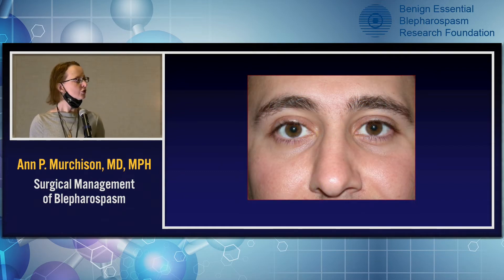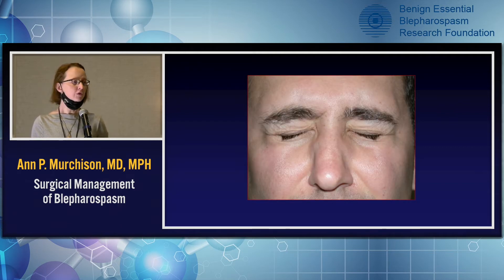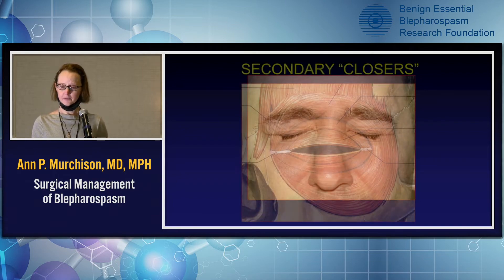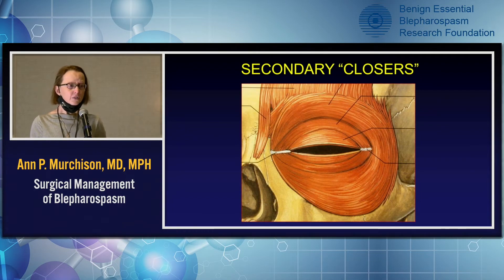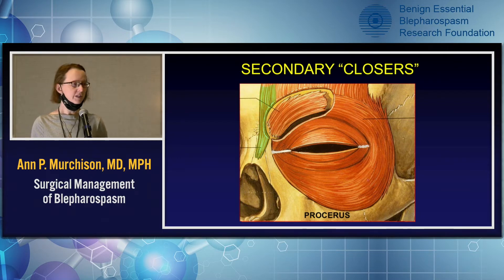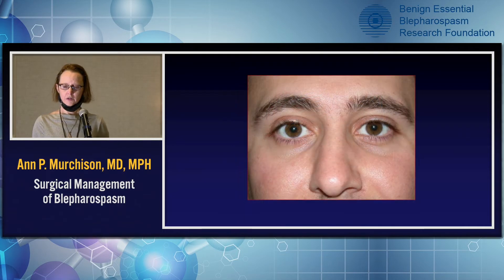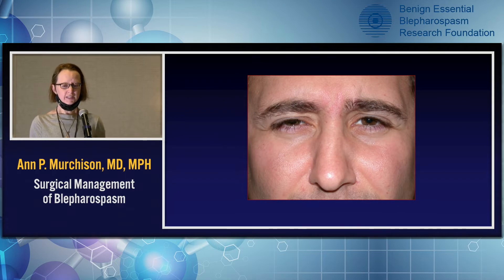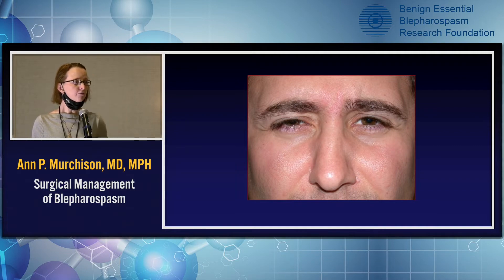In terms of appearance, here you see a patient looking straight ahead and then with forceful closure — that's primarily the orbital orbicularis functioning here. There are other closers as well that play a smaller role. Those include the corrugator muscle and the procerus muscle. Here you can see the patient almost in a scowl — you do get a little bit of closure with activation of these muscles, though not full closure.